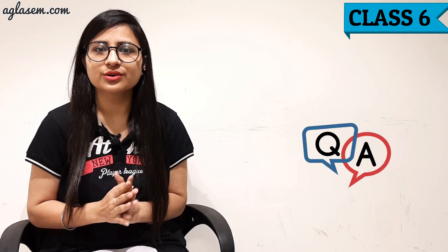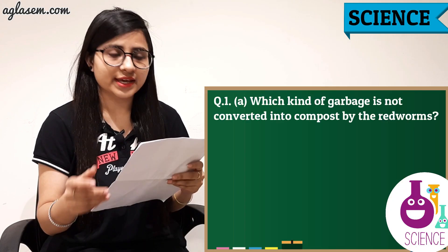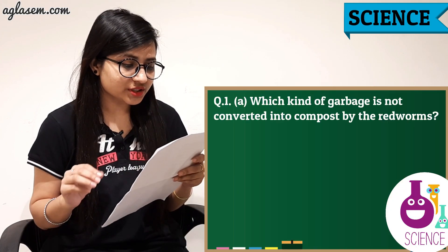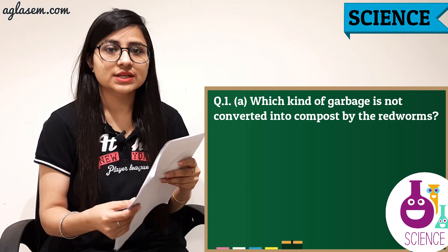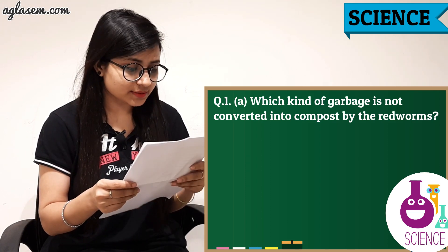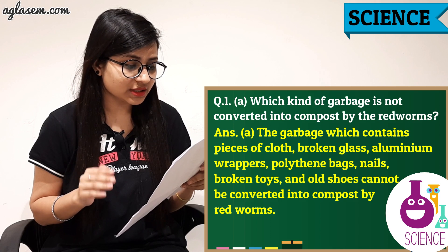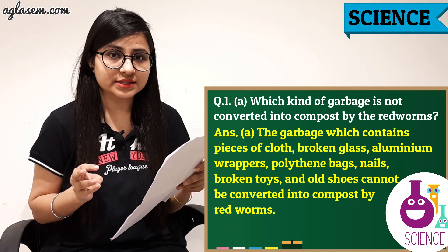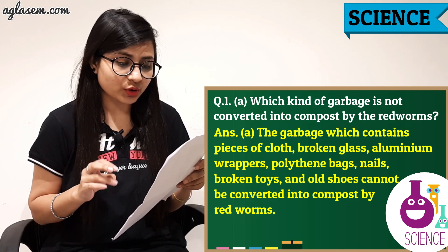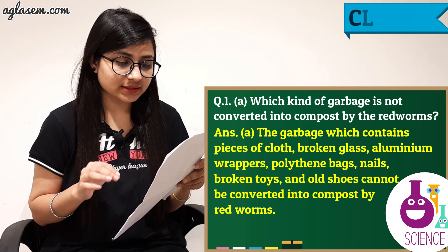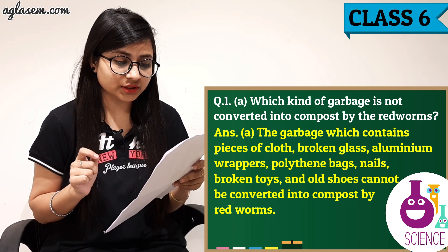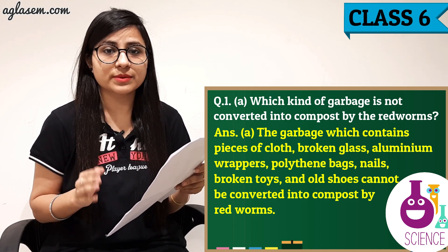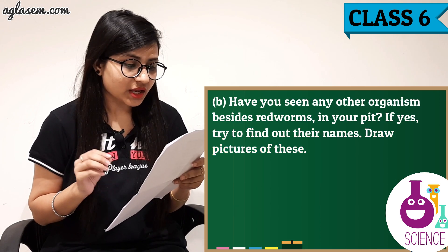Turn to page number 164. Question number 1a: Which kind of garbage is not converted into compost by the red worms? The answer is: garbage which contains pieces of cloth, broken glass, aluminium wrappers, polythene bags, nails, broken toys, and old shoes cannot be converted into compost by red worms.